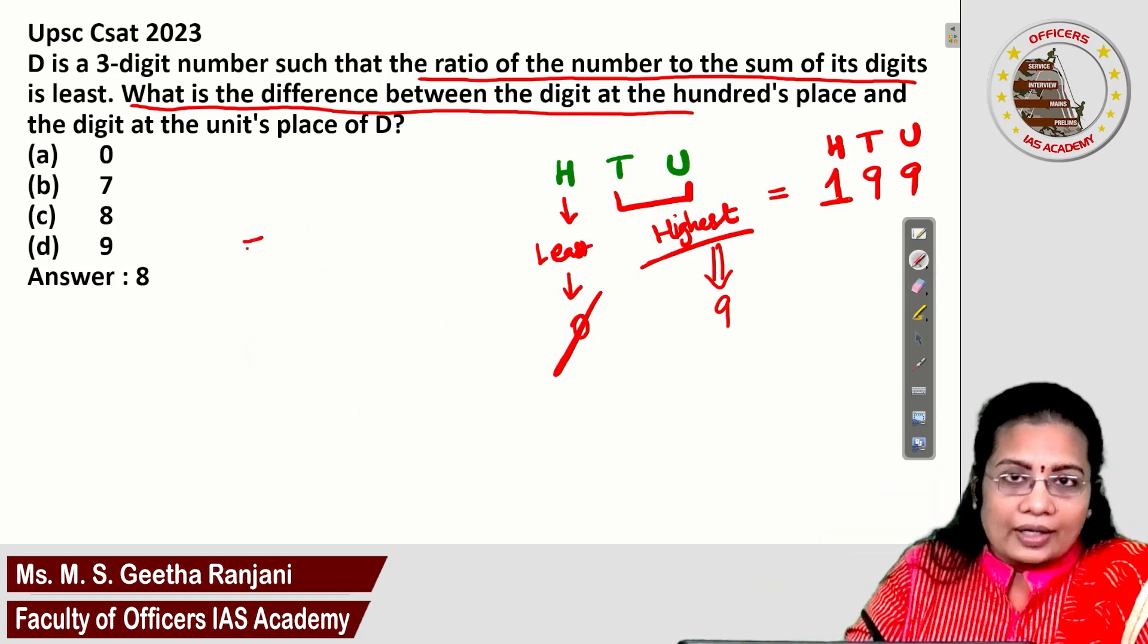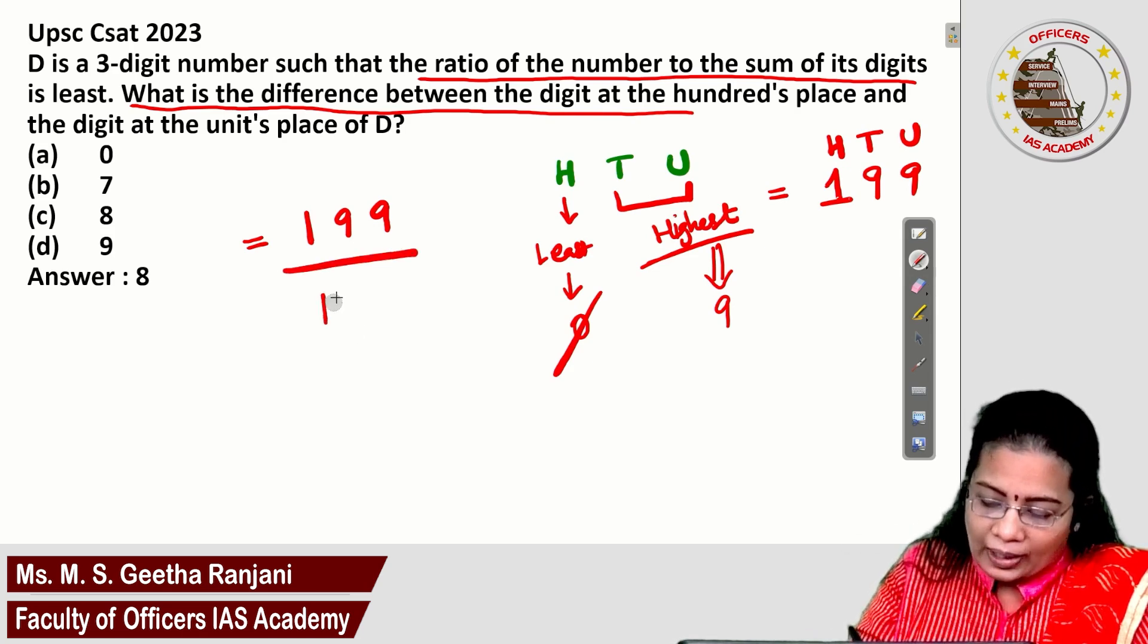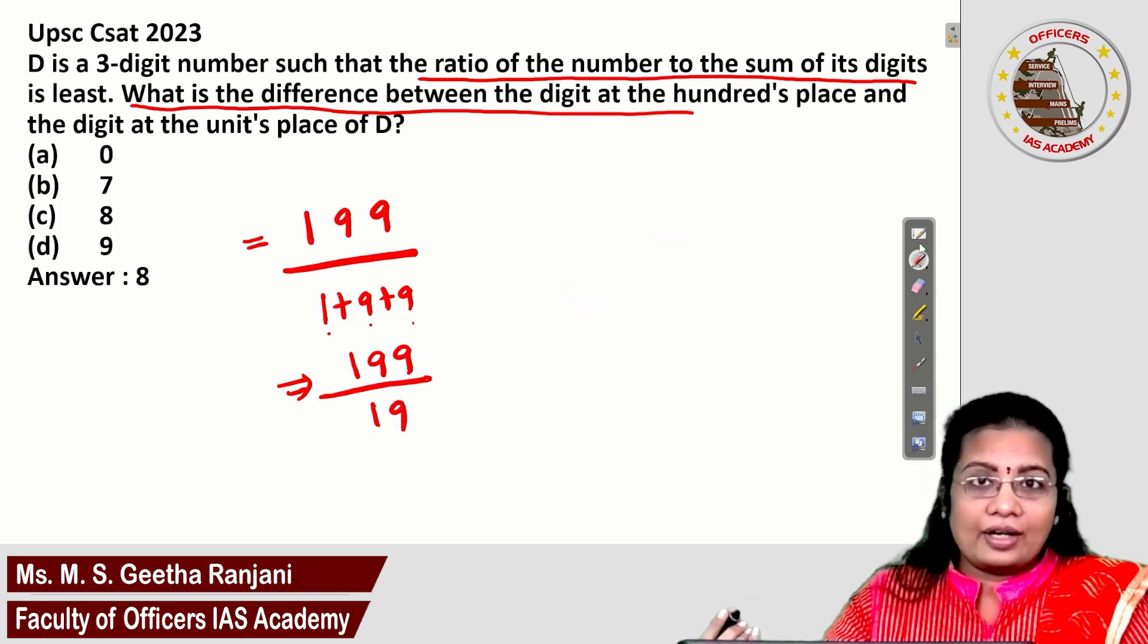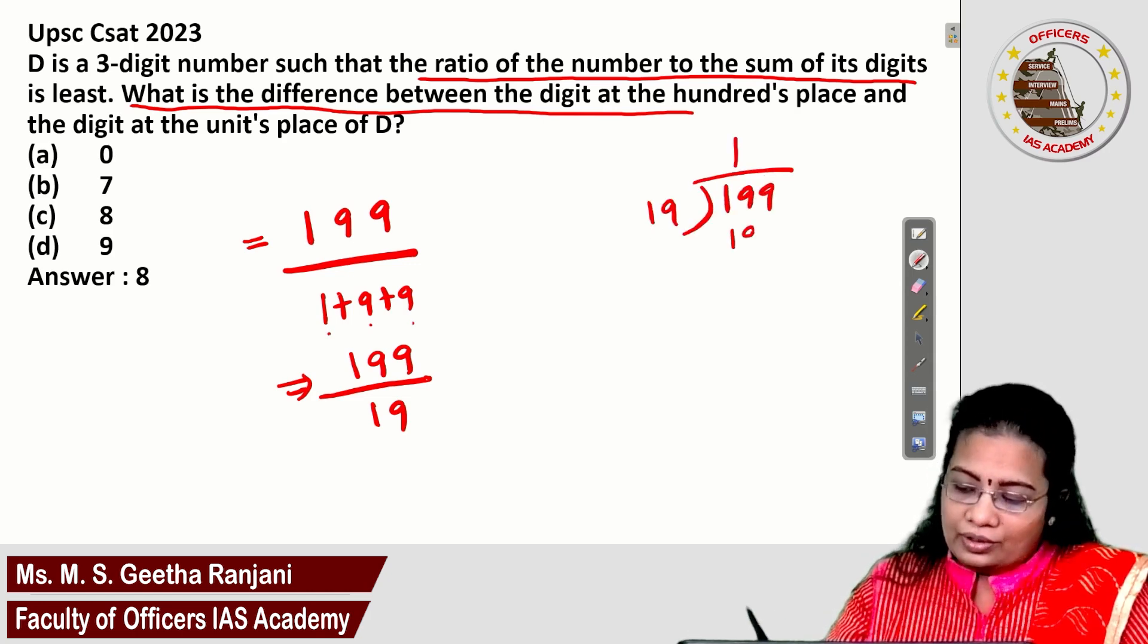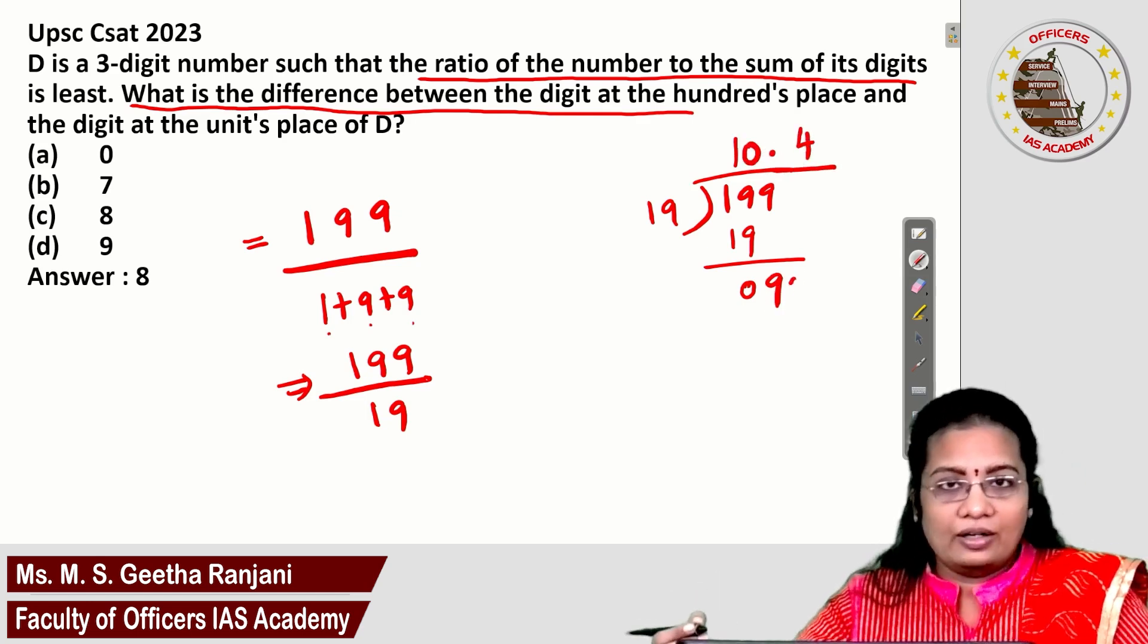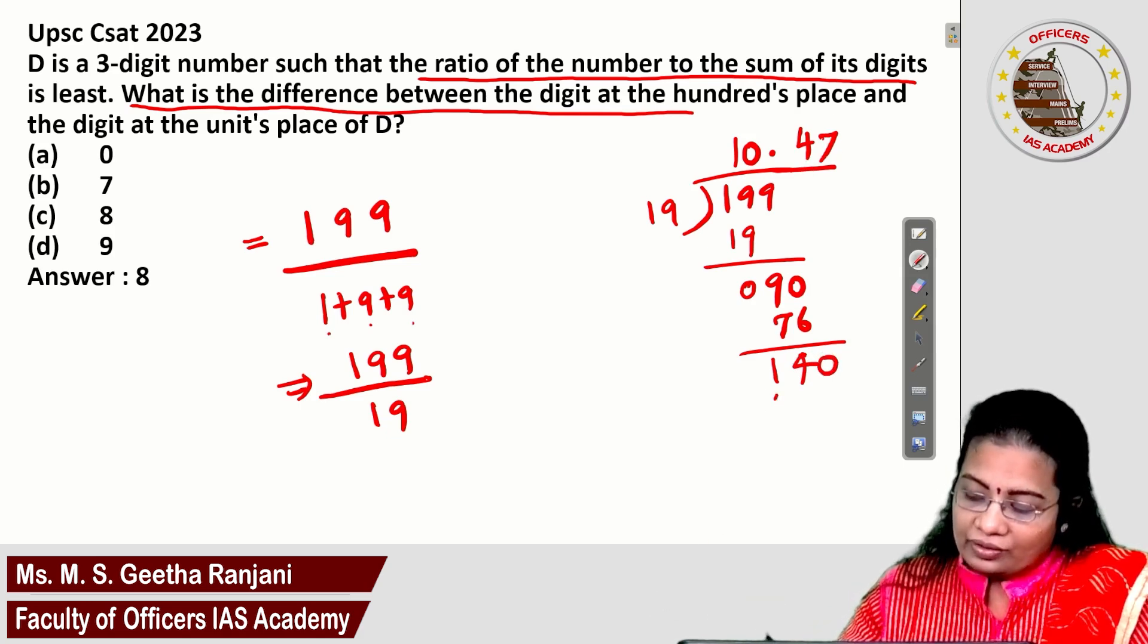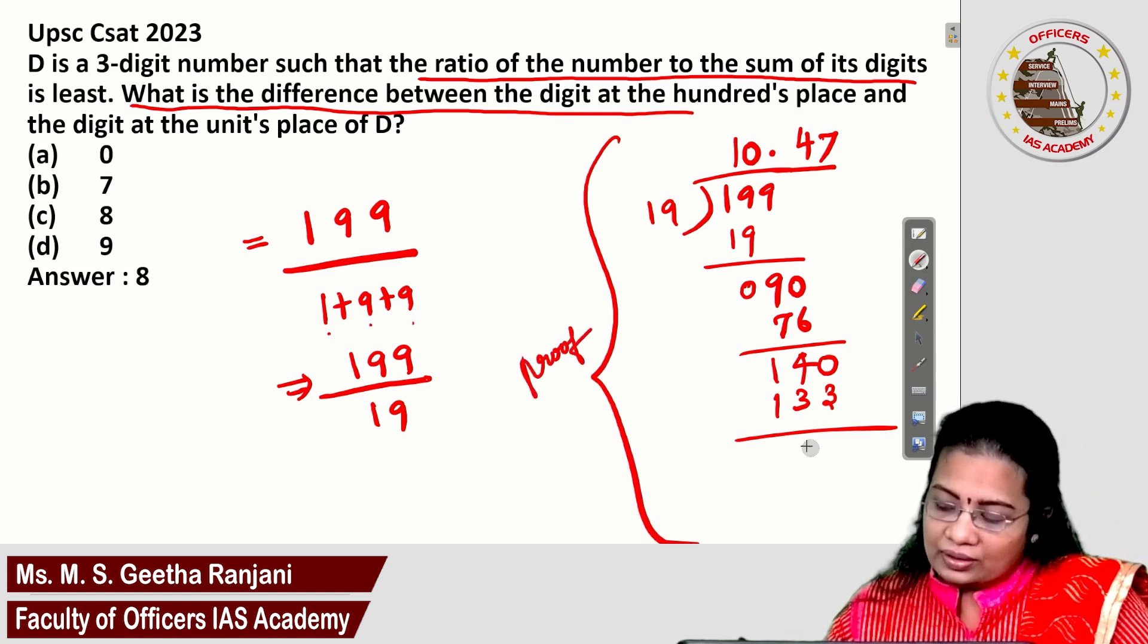The number is 199. If it is divided by its sum of the digits, 1 plus 9 plus 9, you will get 199 divided by 19. What is the result? Let's divide and check the value. 199 divided by 19: 1 times 19 is 19, so 0 here 9. Here 0 points. How many times? 4 times. 4 times 19 is 76, so the remaining is 14. Next time, 7 times 19 is 133.